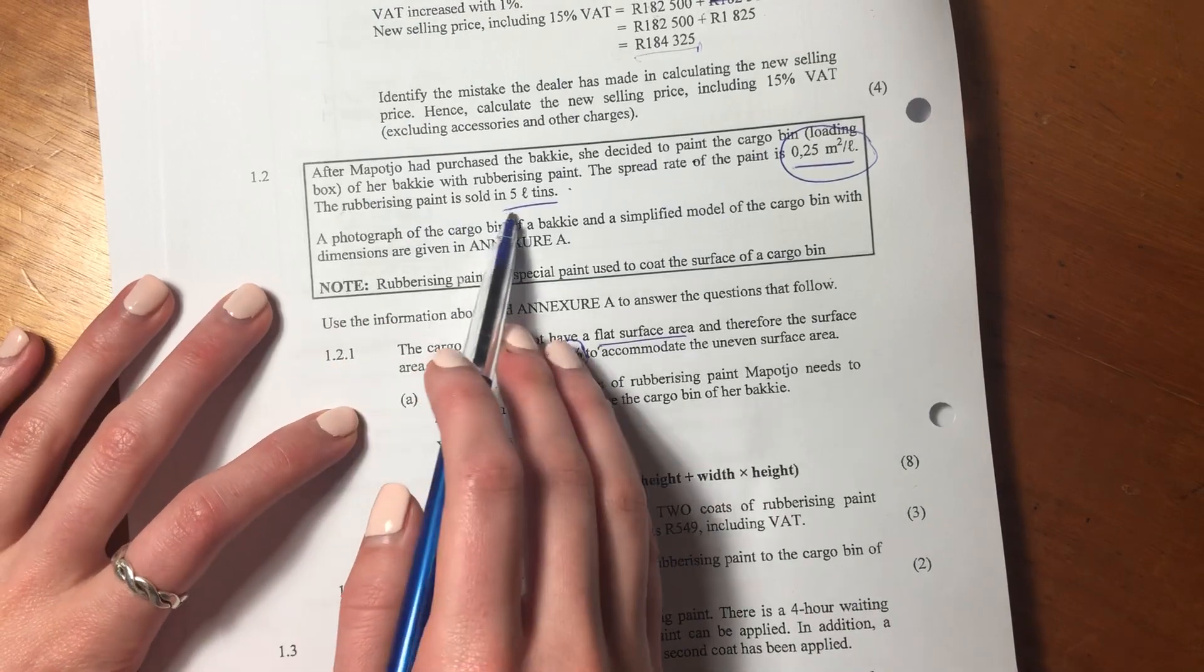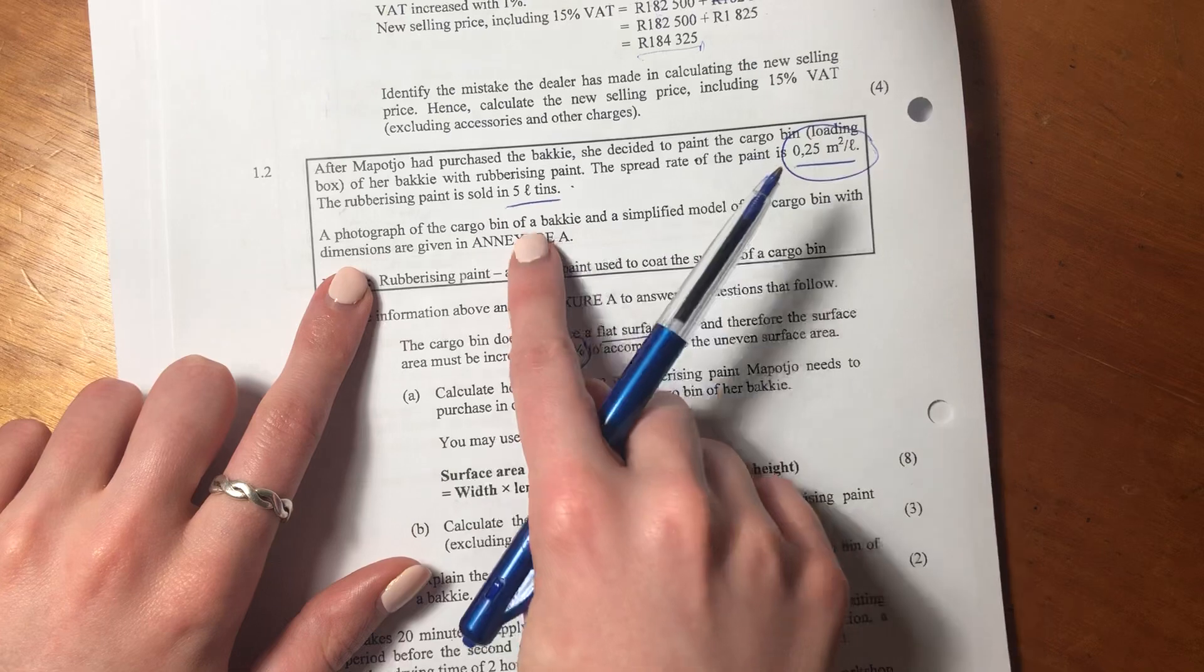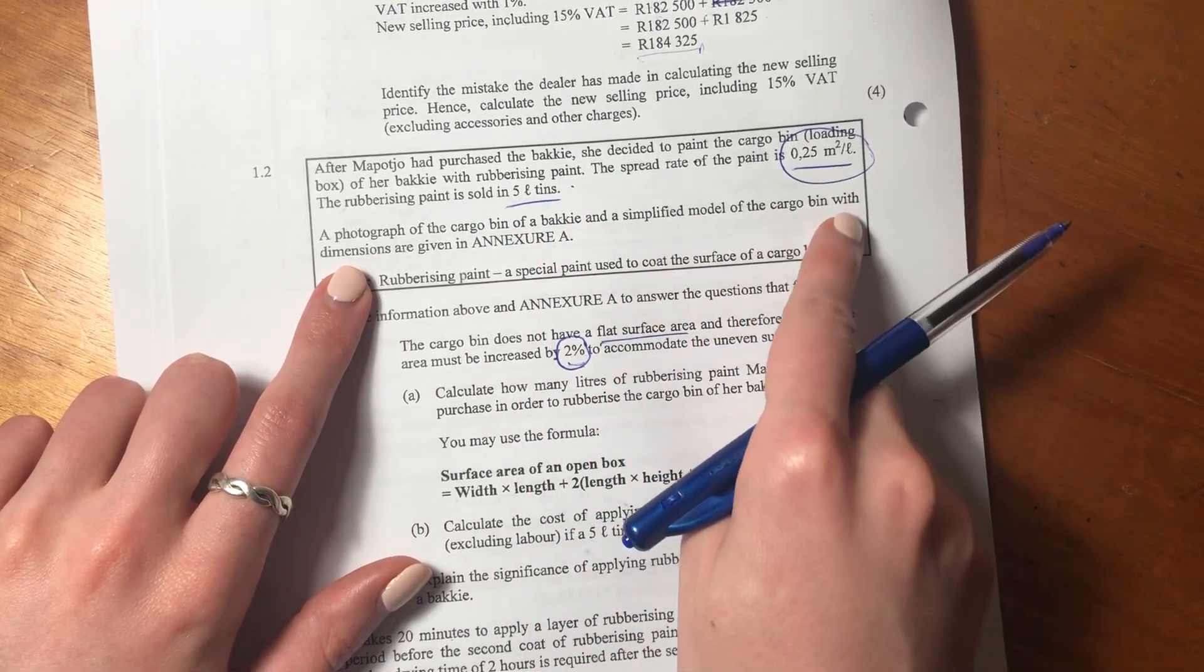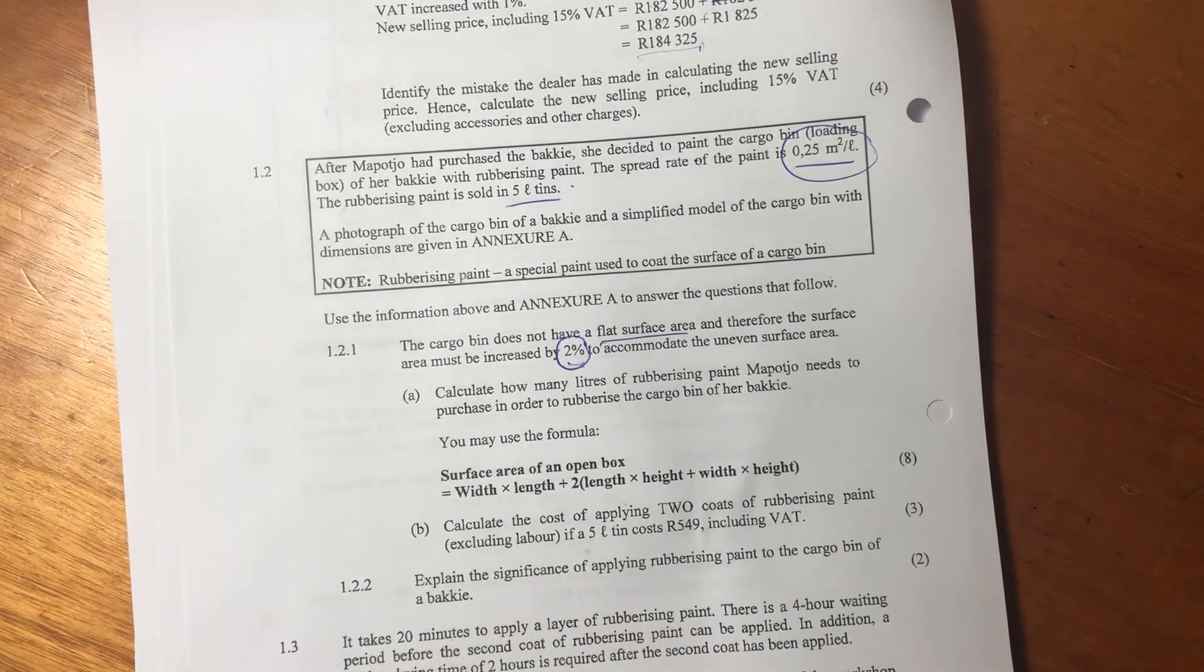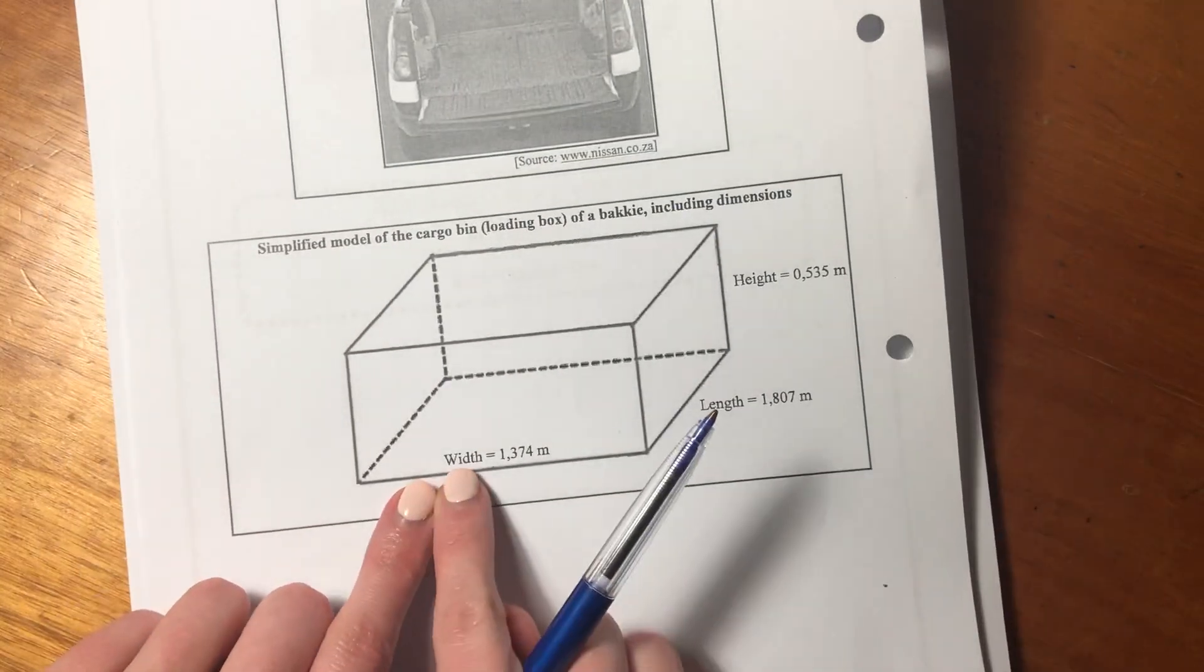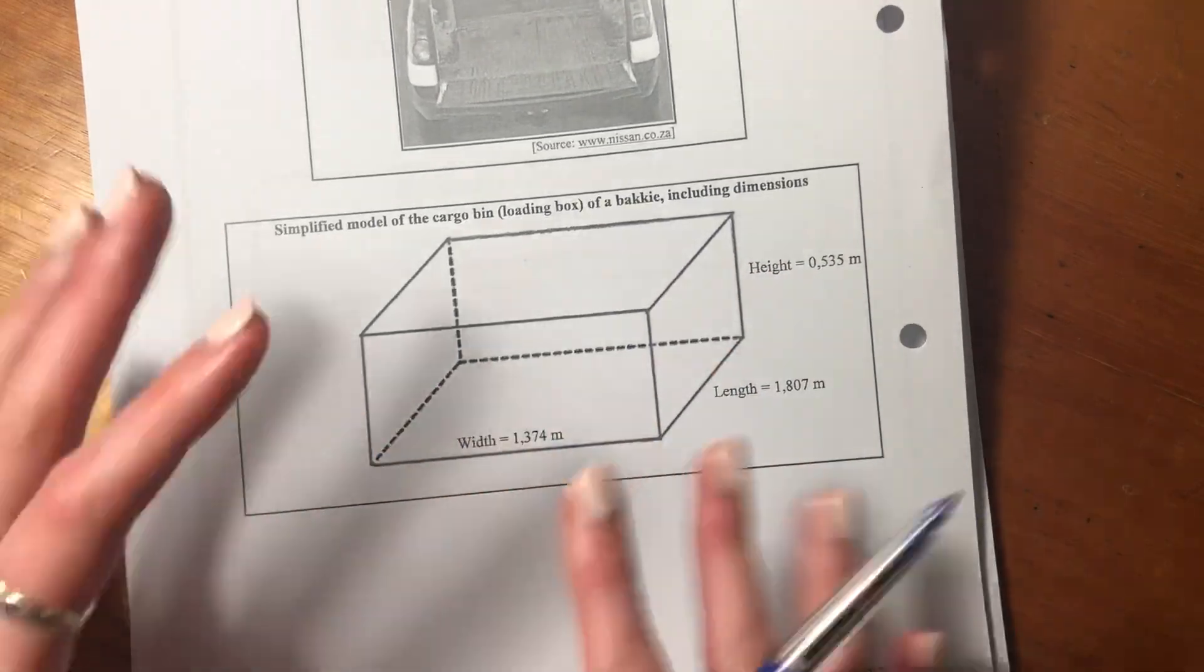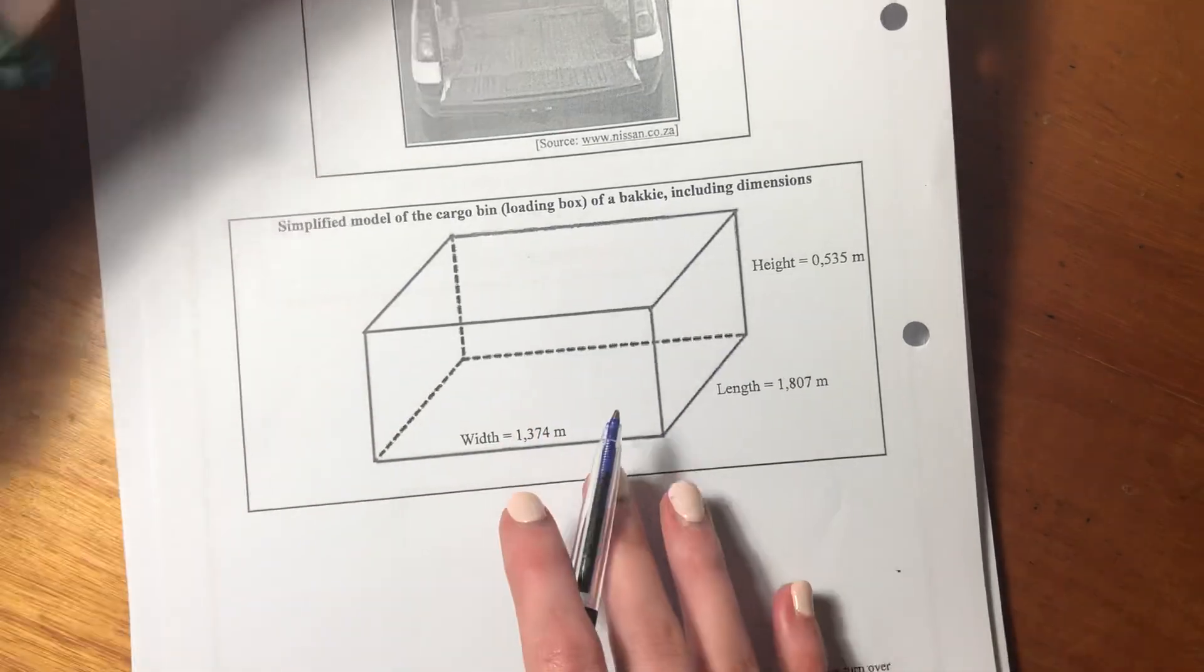The rubberizing paint is sold in five liter tins. It says a photograph of the cargo bin of a Bucky and a simplified model of the cargo bin with dimensions are given in annexure A. So what's important here is to remember that we've given this annexure. There's the Bucky and there's the loading bin. We have the width, the length and the height. All of them are in meters. It's fairly easy. We don't have to do any conversions of the dimensions.